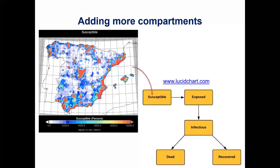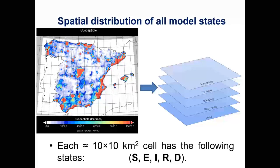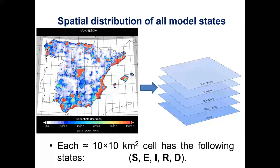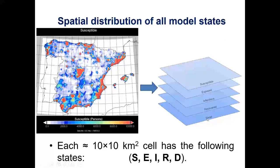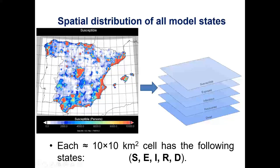Transitions of individuals from one stage to the next are stochastic movements between compartments. To move people from one compartment to another, you need raster layers. You create these raster layers and fill them with zeros — exposed, infectious, recovered, and dead are all initially zero. The susceptible population comes from the gridded population of the world. Each 10 kilometer by 10 kilometer cell has the following states.